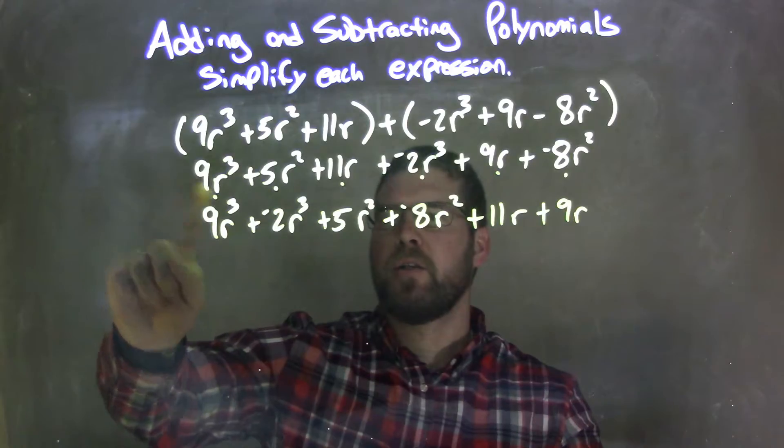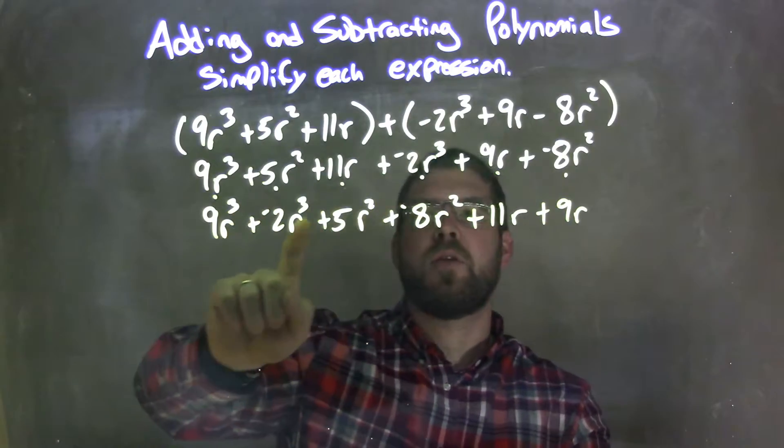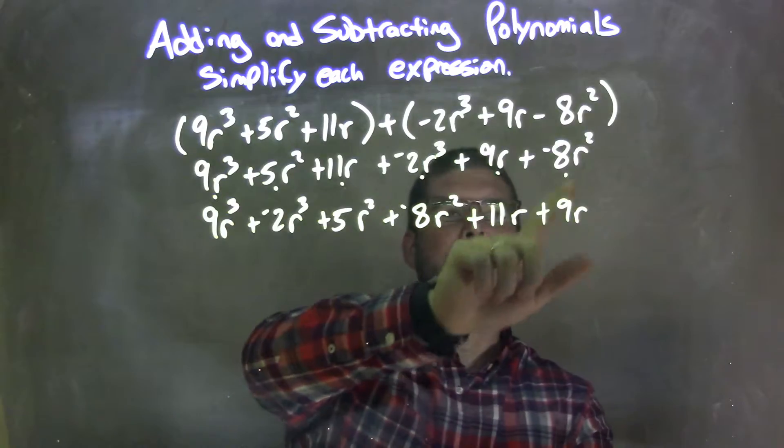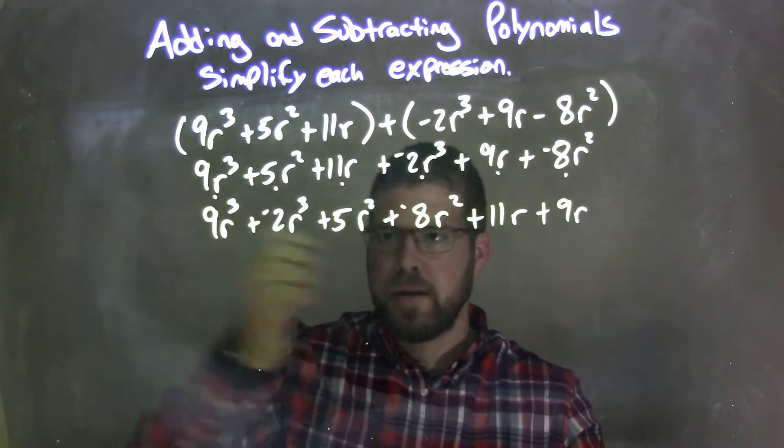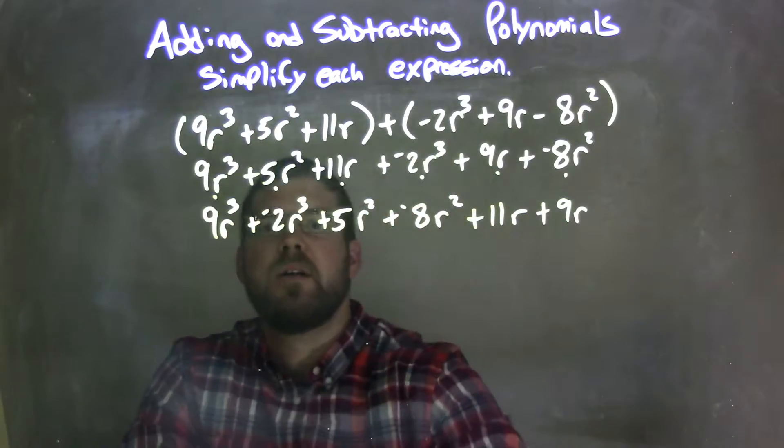And I should have everything, let's double check. 9r³ is right there, 5r² is right there, 11r is right there, negative 2r³ is right there, 9r is right there, and negative 8r² is right there. Brought everything down. Double check, all right, triple check actually, because it's a dot system, and then double check from there.